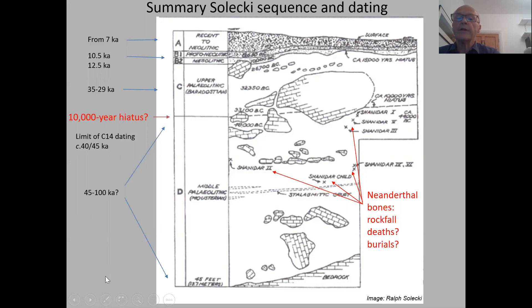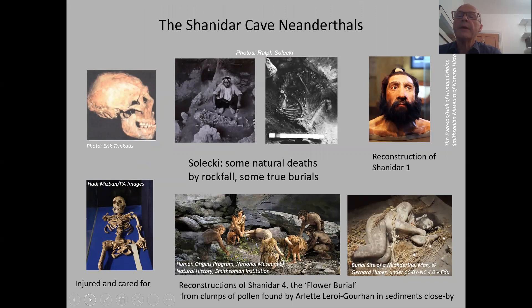He found a series of Neanderthal bones clearly associated with Layer D Mousterian — no human bones were found in Layer C. A unique collection of 10 Neanderthals: men, women, and children. He thought some had died natural deaths in rock fall and some were true burials. Most famously, the burial thought to be buried with flowers — the 'flower burial,' Shanidar No. 4 — has been at the centre of debates about Neanderthal death and burial.